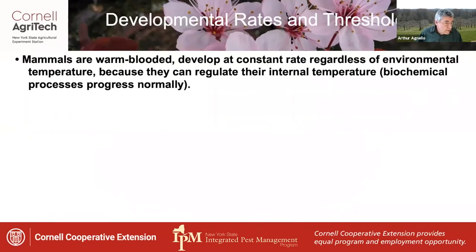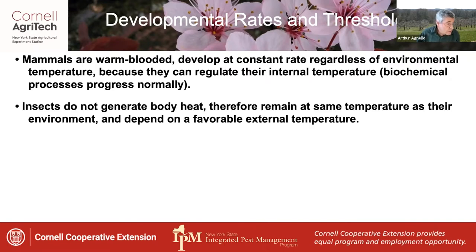Mammals like you and I are warm-blooded, so we develop at a constant rate regardless of the temperature outside. We can regulate our internal temperature, meaning that biochemical processes progress normally. Insects, of course, do not generate body heat, so they remain at the same temperature as their environment, and therefore they depend on a favorable external temperature.